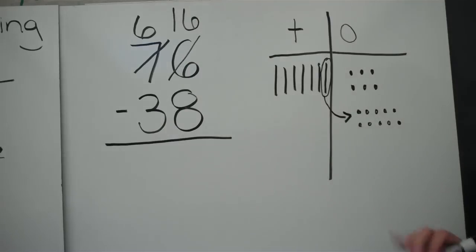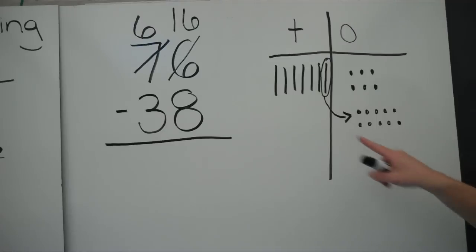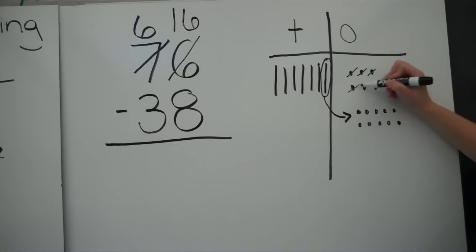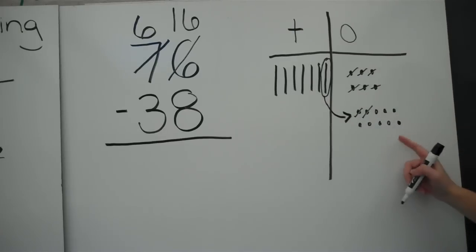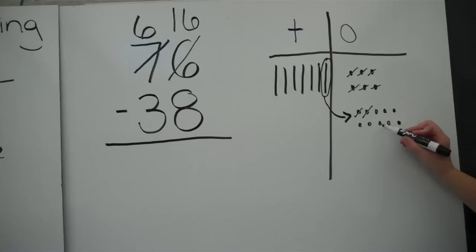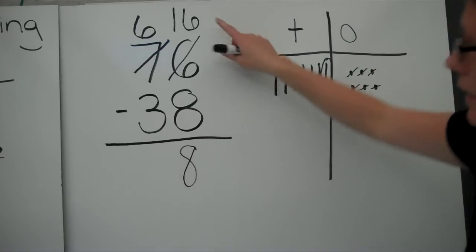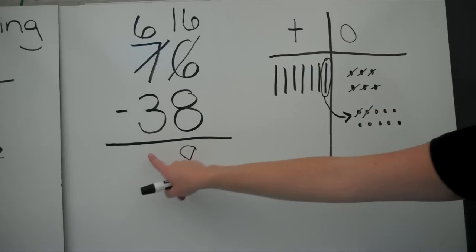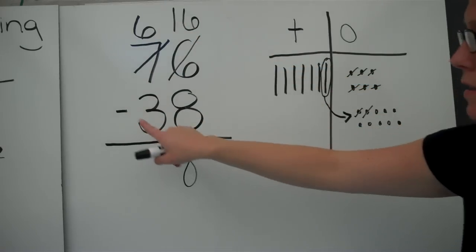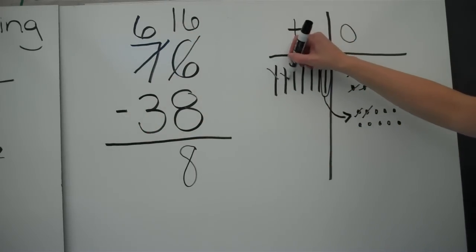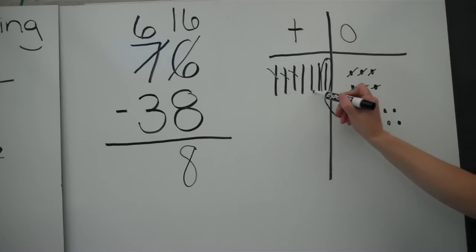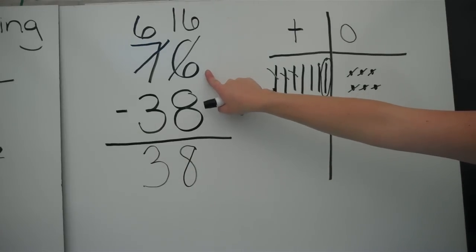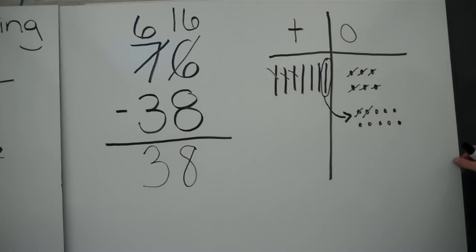Make sure you're showing that in your problem — this is your regrouping. Now I can subtract: sixteen minus eight. I cross off my eight ones and I have eight left, and I know that sixteen minus eight equals eight. Now I go to my tens column: six minus three. I take away those three tens and I'm left with three tens. My answer is thirty-eight.